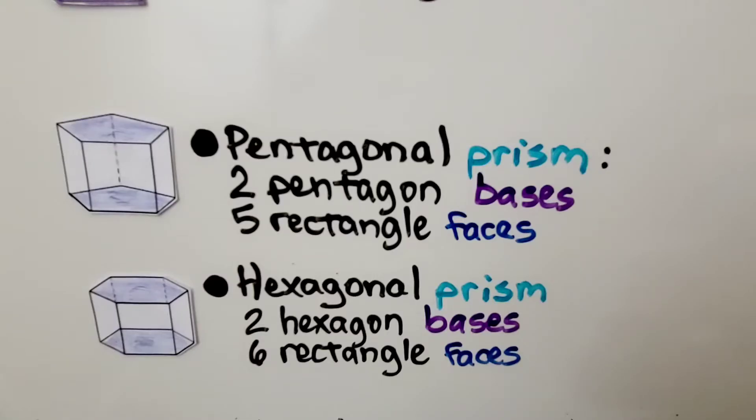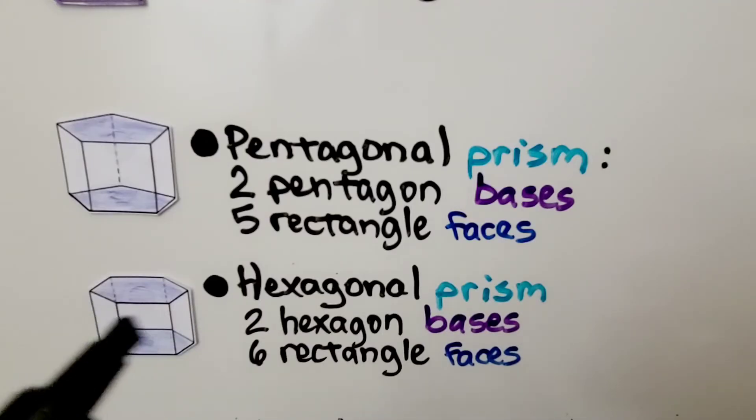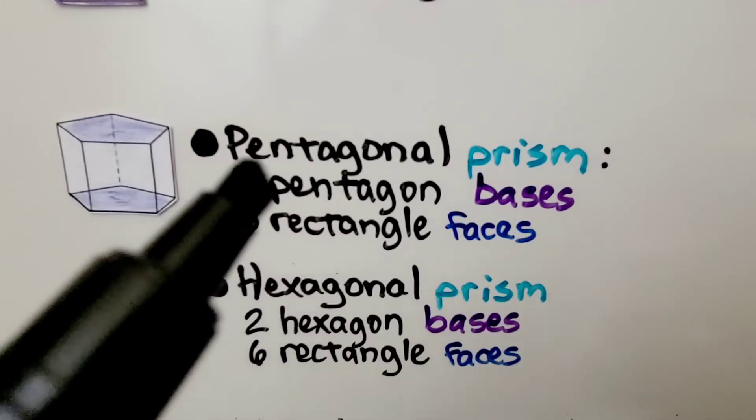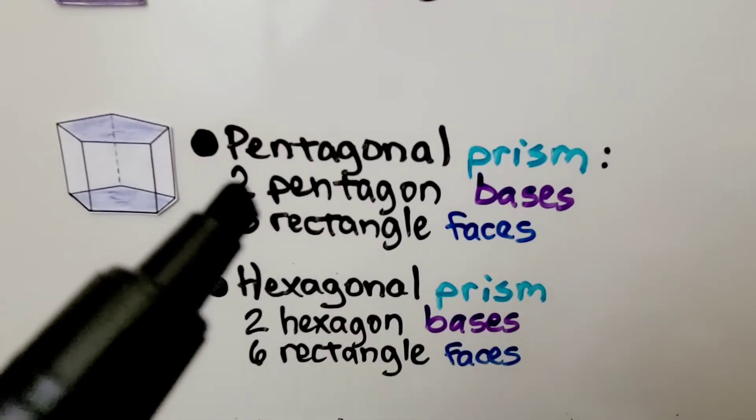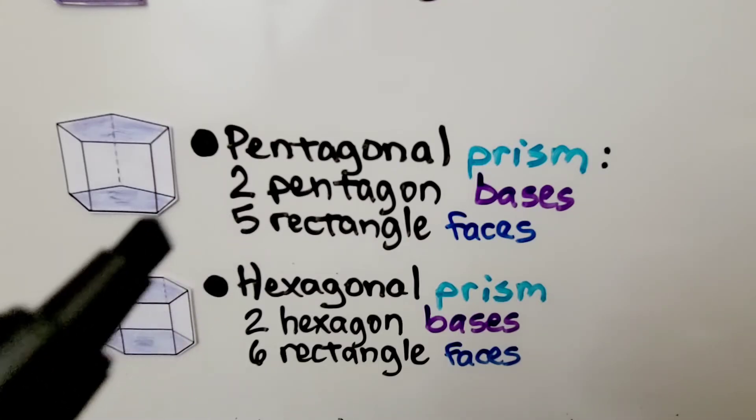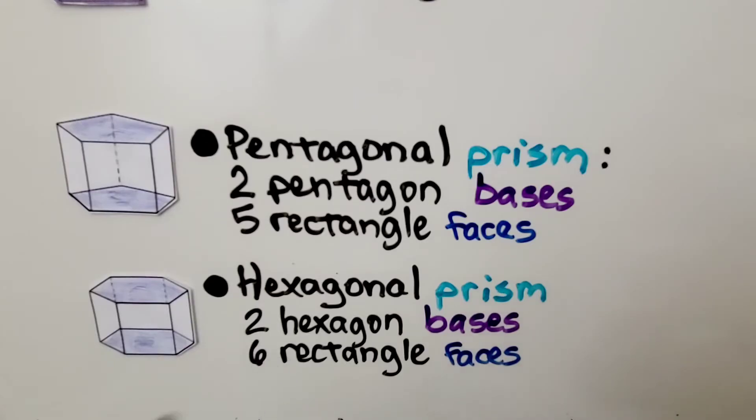A pentagonal prism would have two pentagon bases and five rectangle faces. A hexagonal prism would have two hexagon bases and six rectangle faces. Do you notice that the number of sides of the base, a pentagon has five sides? That's how many rectangle faces there will be. A hexagon has six sides. That's how many rectangle faces there would be.